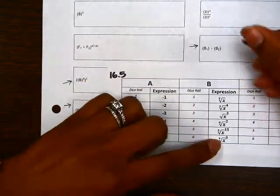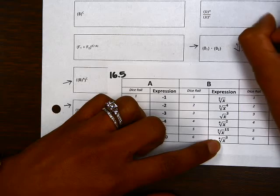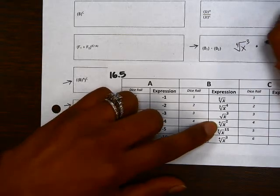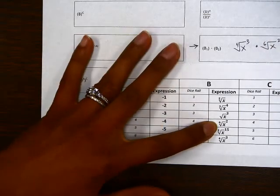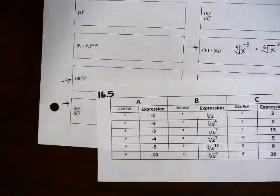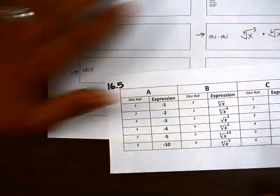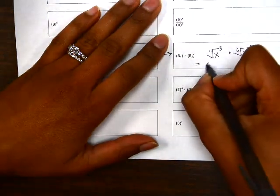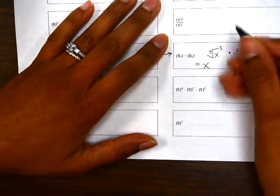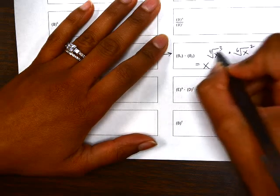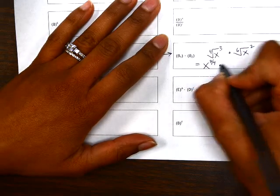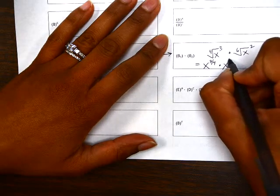For example I could have 4th root of x to the third and I'm going to choose another one, let's say 6th root of x squared. When you're trying to multiply two radical expressions by each other this is going to become easier if we change each radical expression to an exponential with a fraction. So 4th root of x cubed is x to the 3 over 4. 6th root of x squared is x to the 2 over 6.